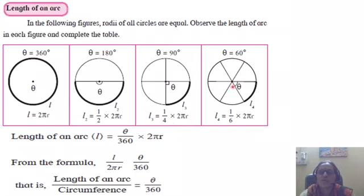L4: here theta is 60 degrees. So 60 upon 360 — you can write 1 by 6. So the arc length is 2πr divided by 6.